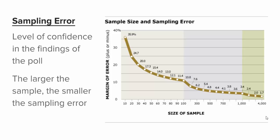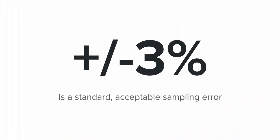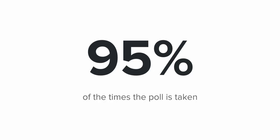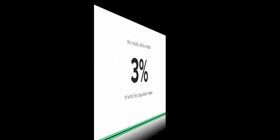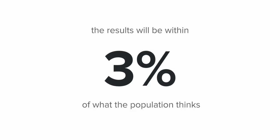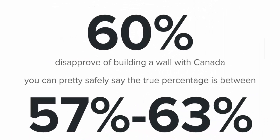Let's break down exactly what that means, though we're going to have to get a little mathematical. If the most realistic and still acceptable sampling error is plus or minus 3 percent, that means that if you took the same poll over and over again, 95% of the time the results will be within 3% of what the population actually thinks. So if I'm taking a poll about building the wall with Canada, and 60% of likely voters disapprove of that wall with our standard margin of error at plus or minus 3%, we can pretty safely say that 57 to 63% of the voters do not want you to build that wall.